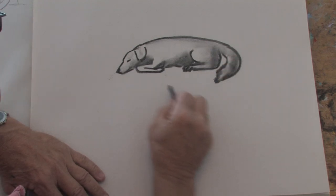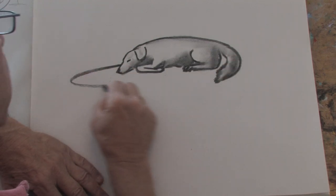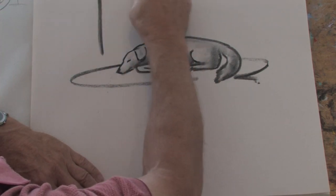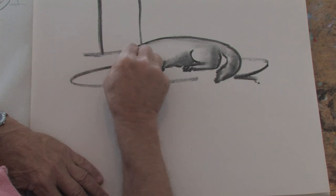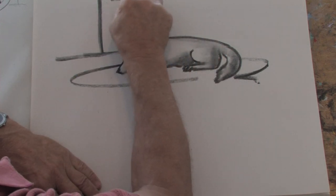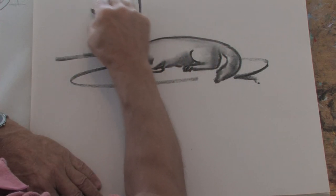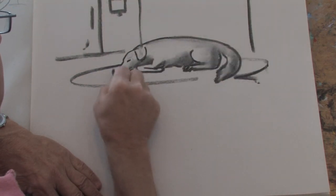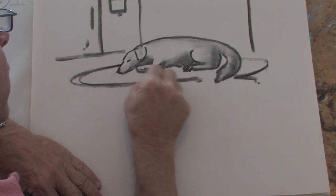Now, to make him look like he's on something, we're going to put a little carpet that you normally see him on. And he might be in the house. And I'll just draw where the front door would be. And there we have him in the house, on the carpet, just enjoying his sleep.